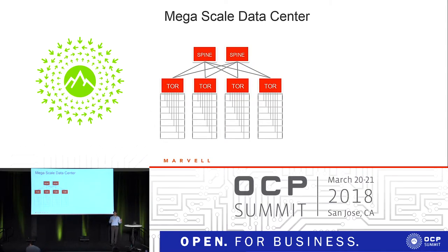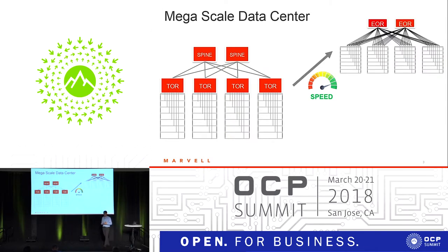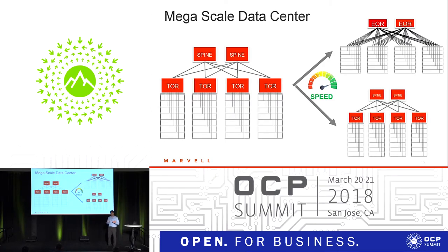The Megascale data center is where it all started a few years ago with the spine-and-leaf topology — mainly spine and top-of-rack. I'm showing a two-hierarchy spine-leaf configuration, but the data center can have four or five hierarchies. Megascale data centers increase speed almost every two years by doubling it. However, new topologies are now emerging: for example, the end-of-row topology eliminates the top-of-rack, and the end-of-row switch talks directly to each server. There are also classic topologies scaling up in speed and capacity.